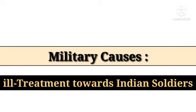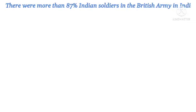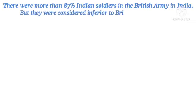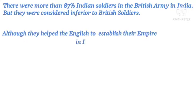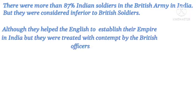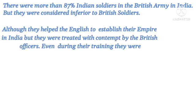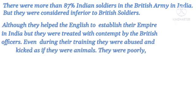The very first factor is ill treatment towards Indian soldiers. More than 87% of the British army in India consisted of Indian sepoys, but they were considered inferior to British soldiers. They were treated with contempt by British officers. Even during their training, they were abused and kicked as if they were animals.